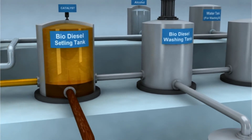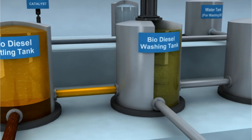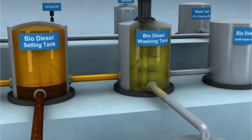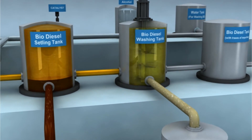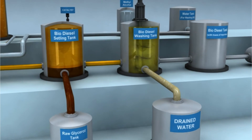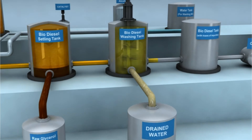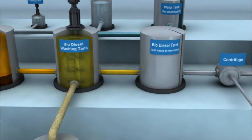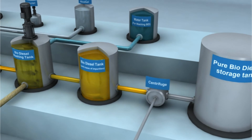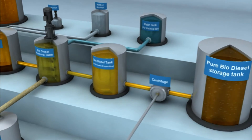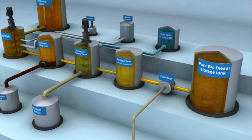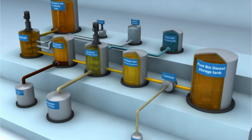The product biodiesel is then transferred into a washing tank where warm water is used to wash the biodiesel to remove any excess glycerol and soap remaining in the product. This is done until clear water is seen below the biodiesel in the washing tank. The washed biodiesel is finally dried either by centrifuge or by distillation to remove any impurities. The final product should meet biodiesel specifications of BIS 15607:2005.